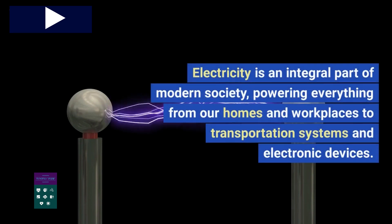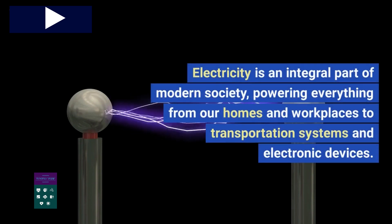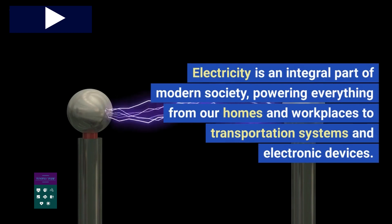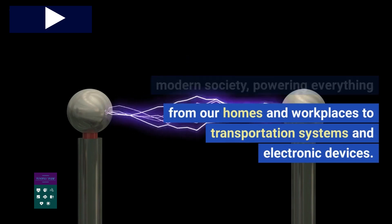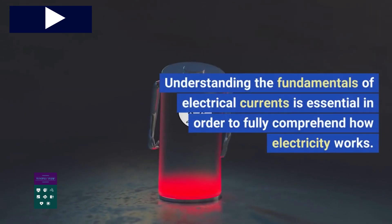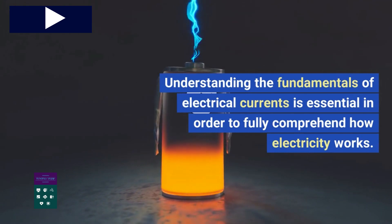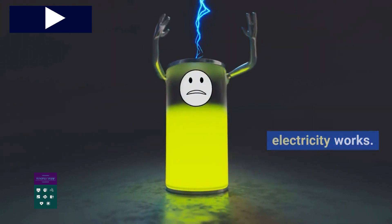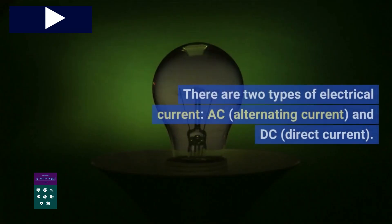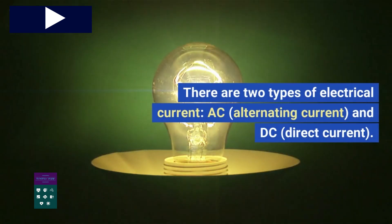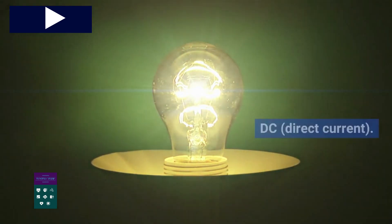Electricity is an integral part of modern society, powering everything from our homes and workplaces to transportation systems and electronic devices. Understanding the fundamentals of electrical currents is essential to fully comprehend how electricity works. There are two types of electrical current: AC, alternating current, and DC, direct current.